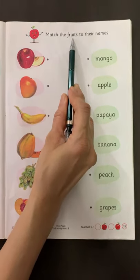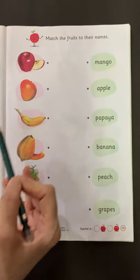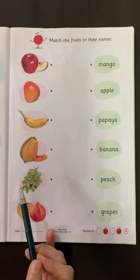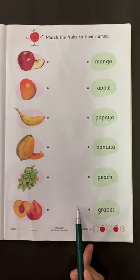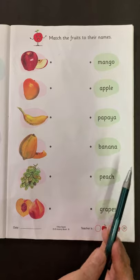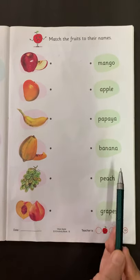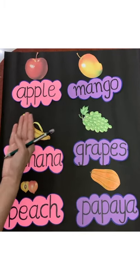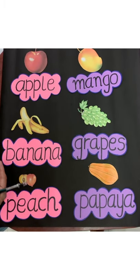Match the fruits to their names. In this worksheet we have to match the fruits to their names — this means the spelling of fruits. One side has fruits and the other side has their names. Look at here — here are some fruits.